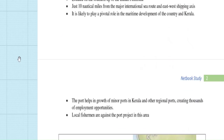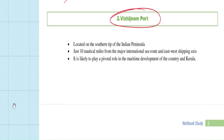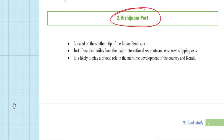The next news is about Vizhinjam Port. Looking at the map, this port is located at the southern tip of Kerala. There has been ongoing agitation in this area — the Central Government wants to establish and expand this port, but local fishermen are opposing it. They argue that the project will affect their livelihoods and disturb fish stocks in the region. Ports are extremely important from both a geographical and economic perspective, and one must know their locations and significance.